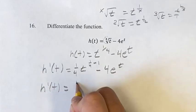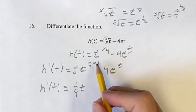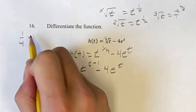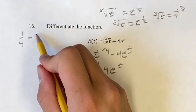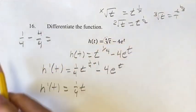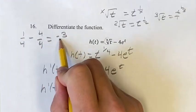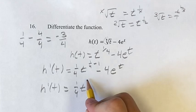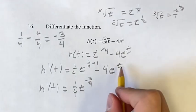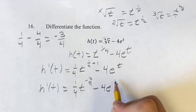Simplifying this, we get 1 fourth, t, 1 fourth minus 1. We want to get a common denominator. 1 is equal to 4 divided by 4. So now we have a common denominator. We can subtract the numerators. 1 minus 4 is negative 3 over that denominator, which is 4. So t to the negative 3 over 4 minus 4e to the t.